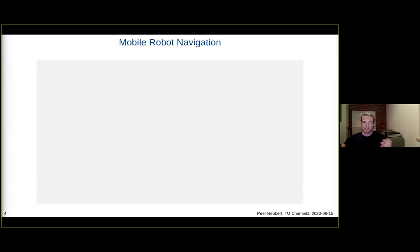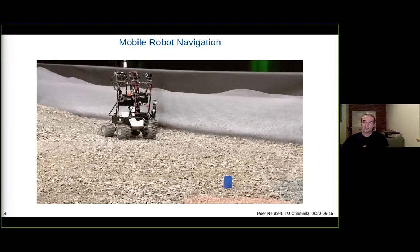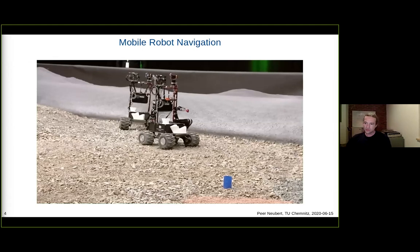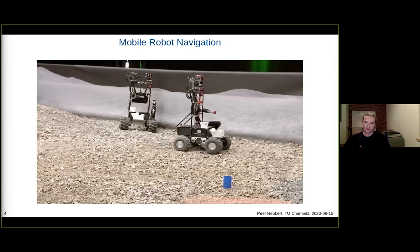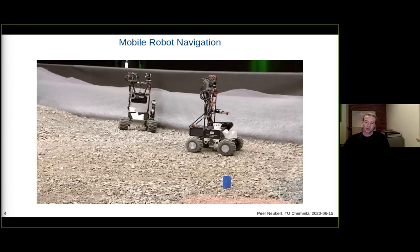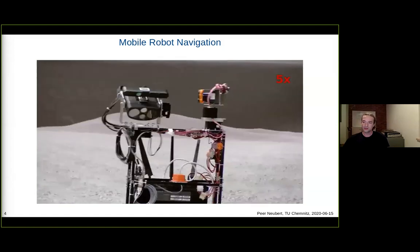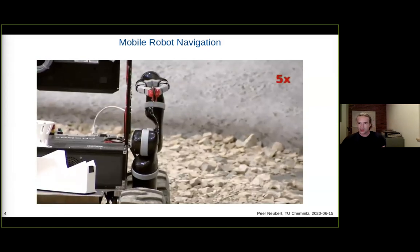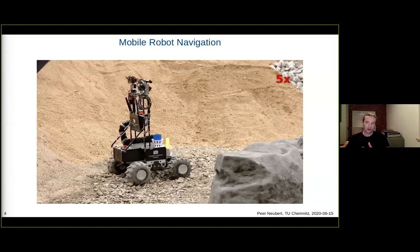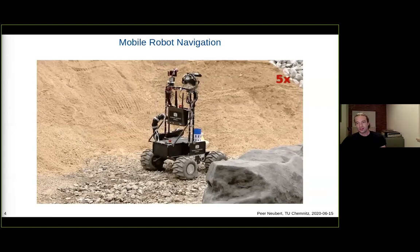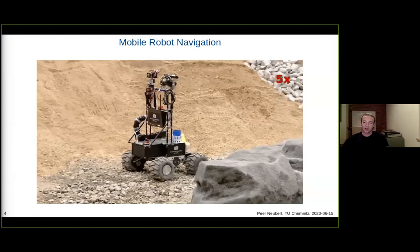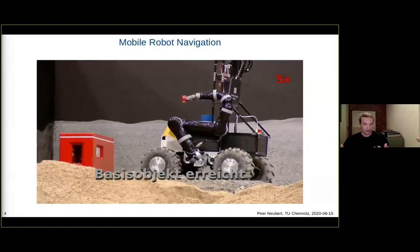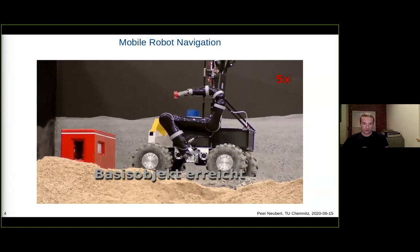We are working in the area of mobile robotics, mainly navigation tasks. Here you can see two of our robots equipped with different sensors such as cameras, laser scanners, IMUs, and odometry sensors. They can move in unstructured rough terrain, they have mobile manipulators so they can search for and grab objects, and to solve complex tasks in complex environments we need complex algorithms to perceive the environment and localize within it.